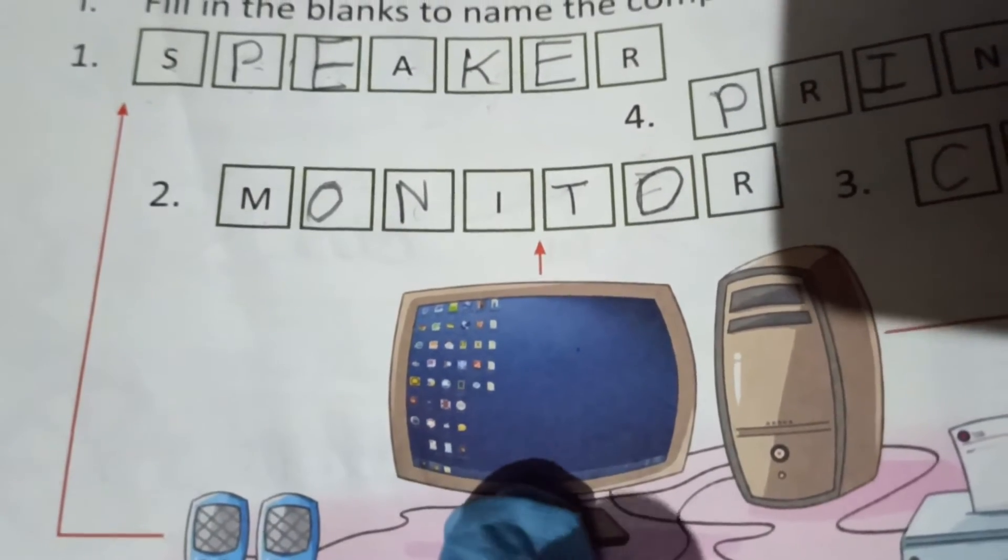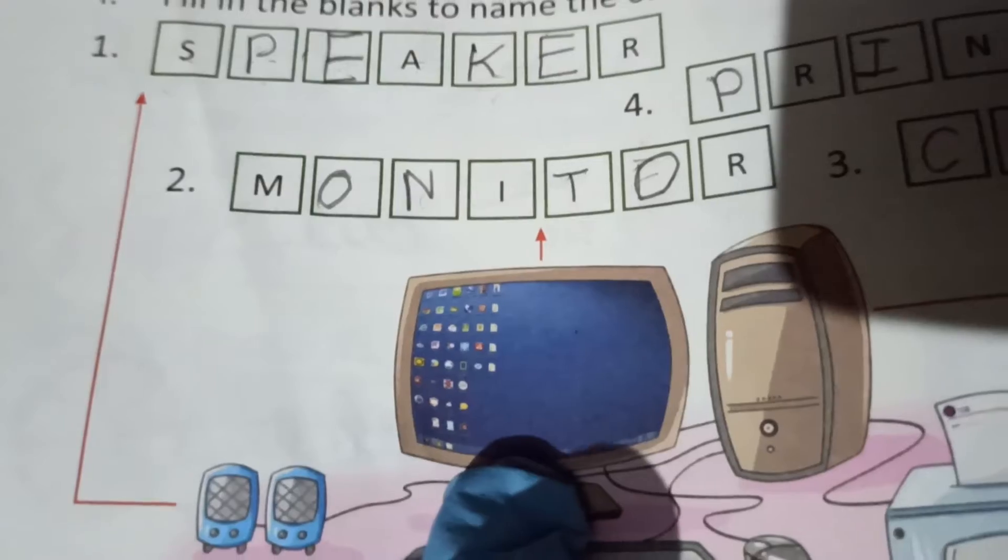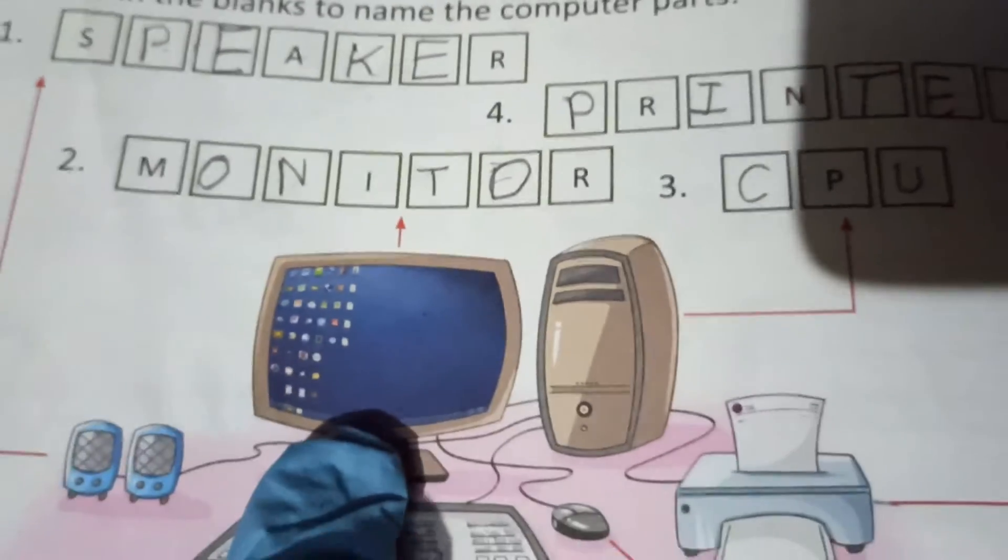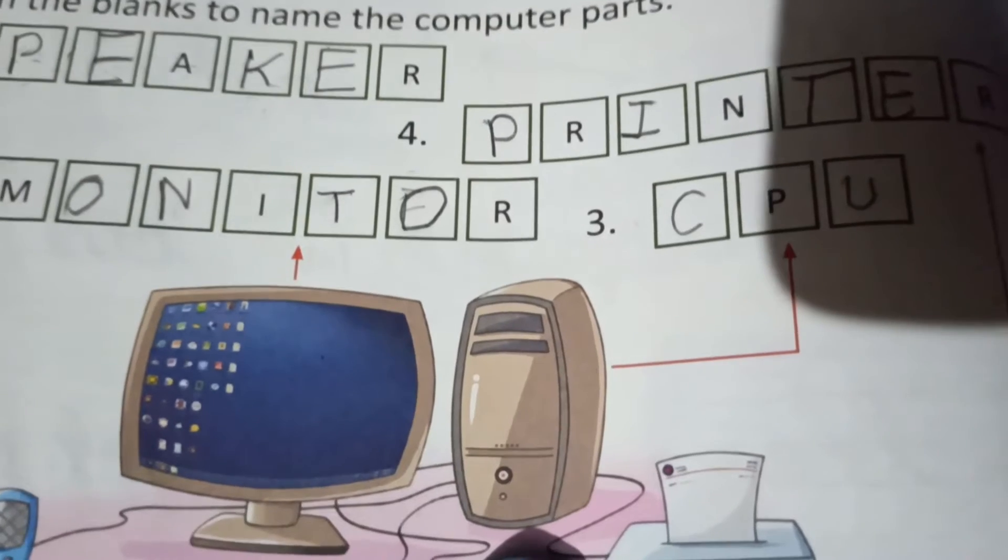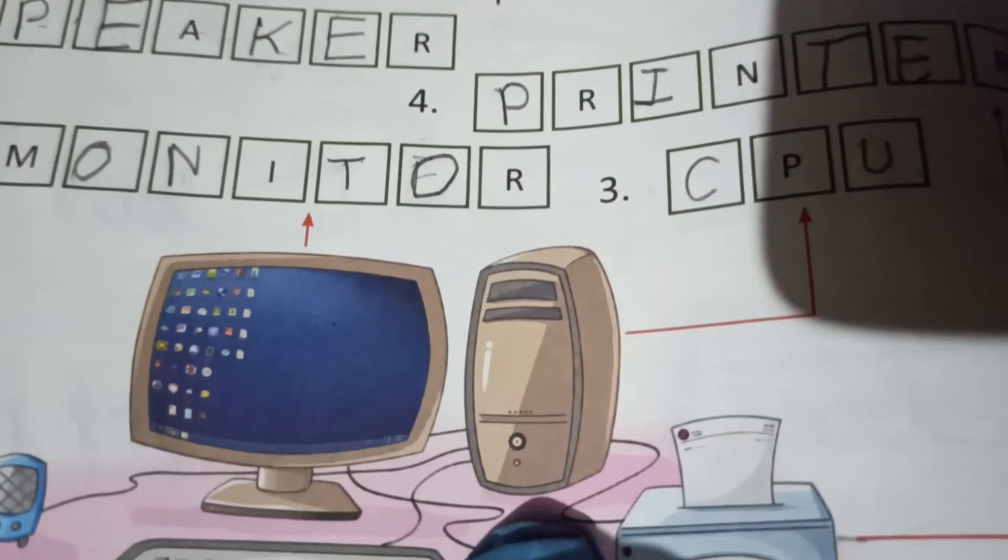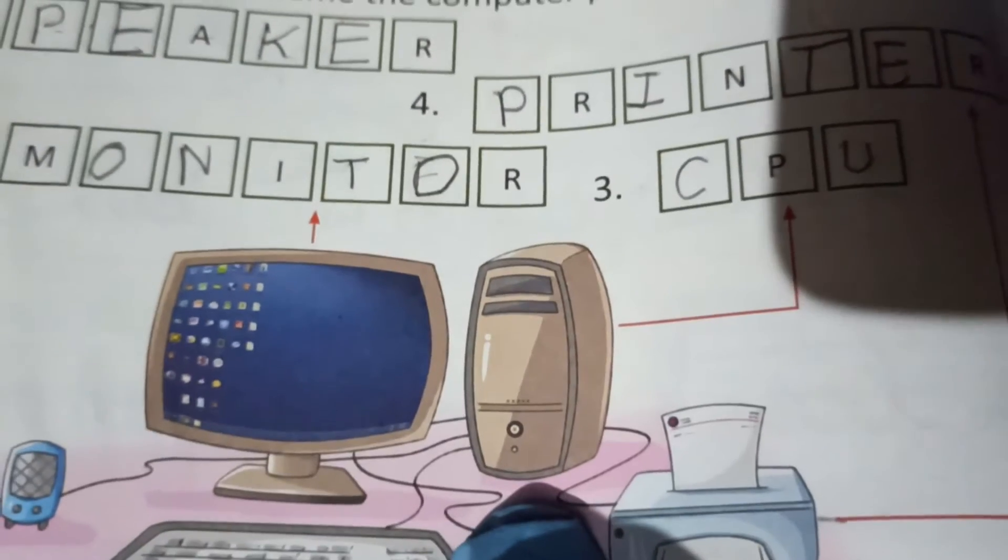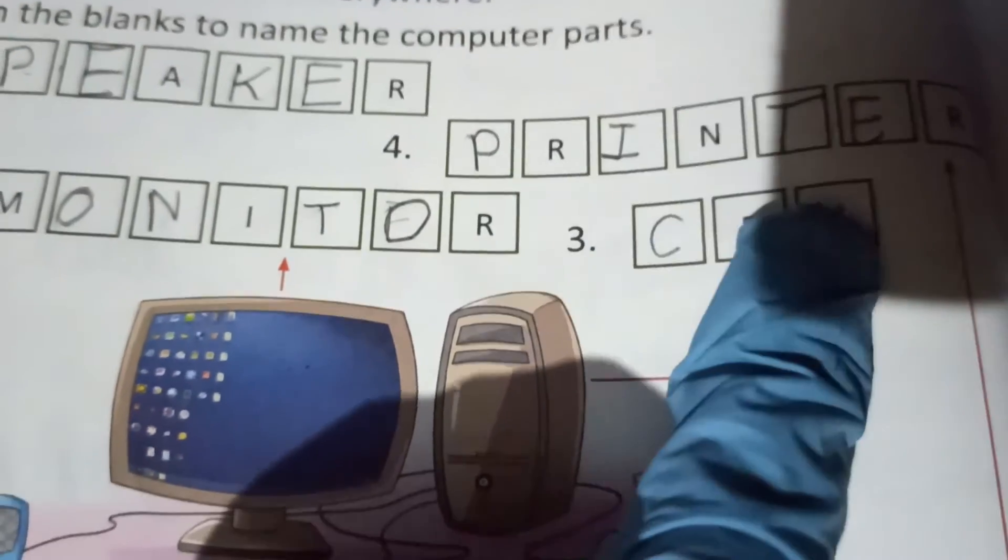TV کی طرح ہے نا یہ. This we call monitor. Now come to the third one, this is CPU. CPU is the brain of the computer. Computer کا brain ہوتا ہے CPU. Write down CPU.